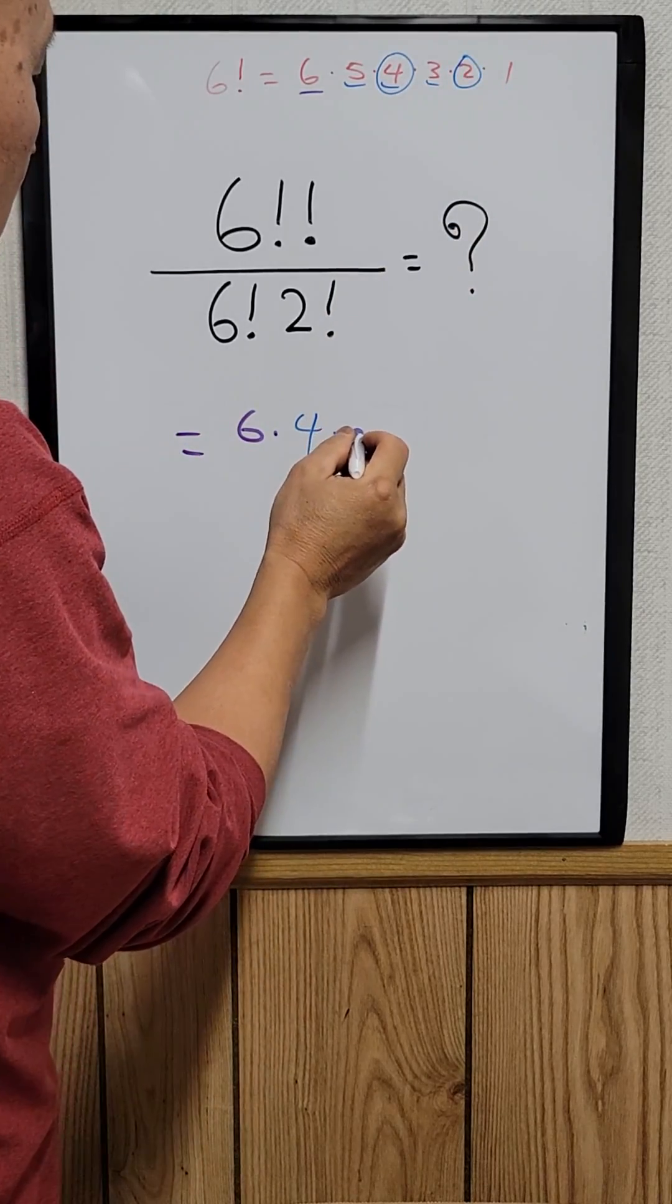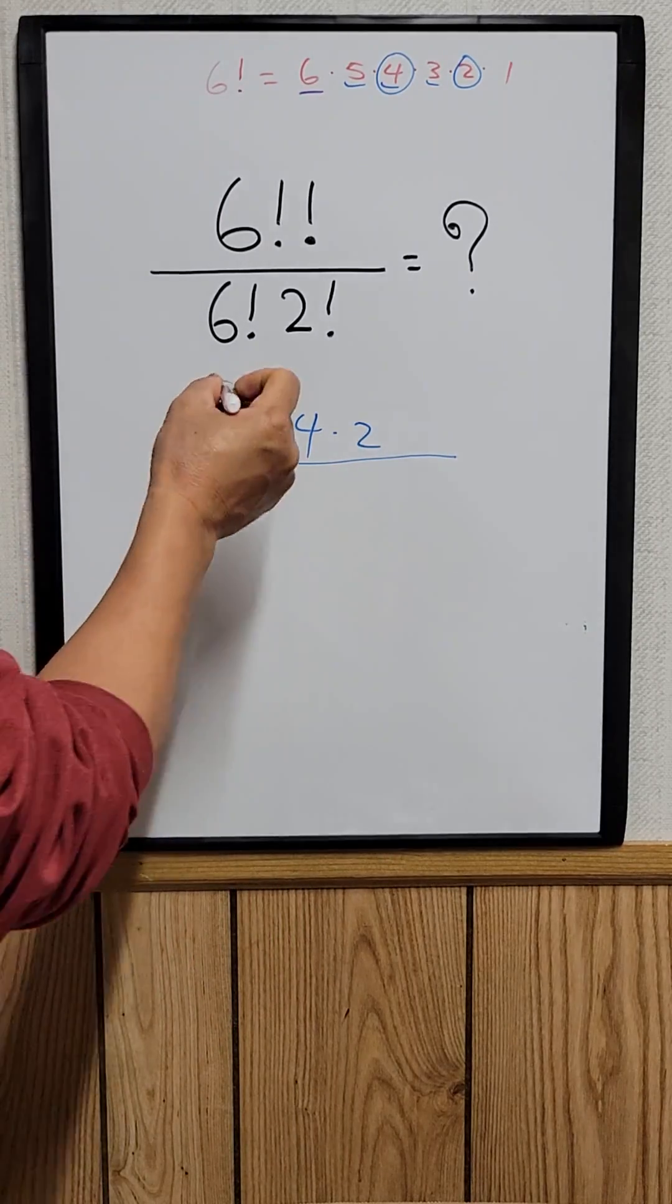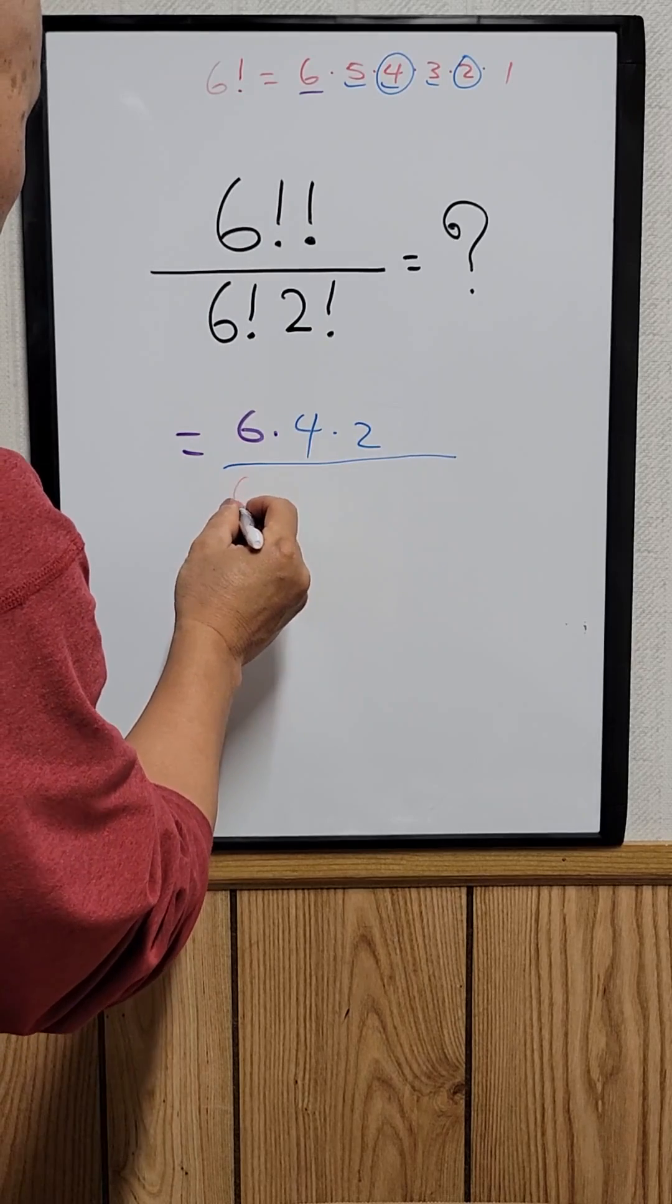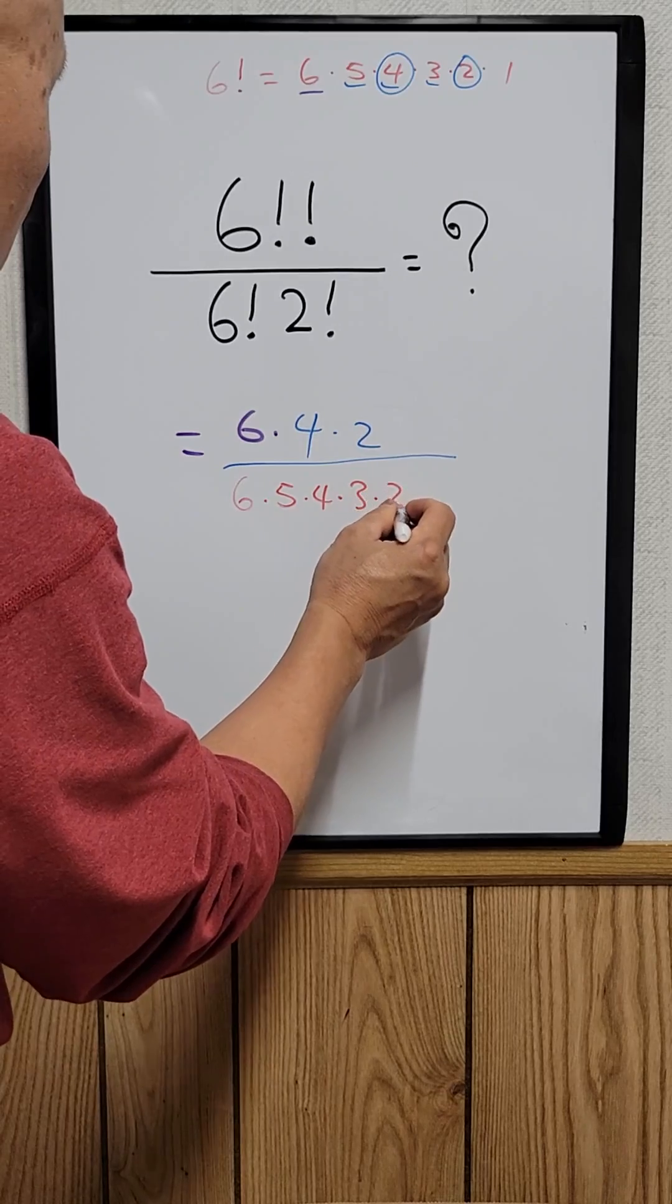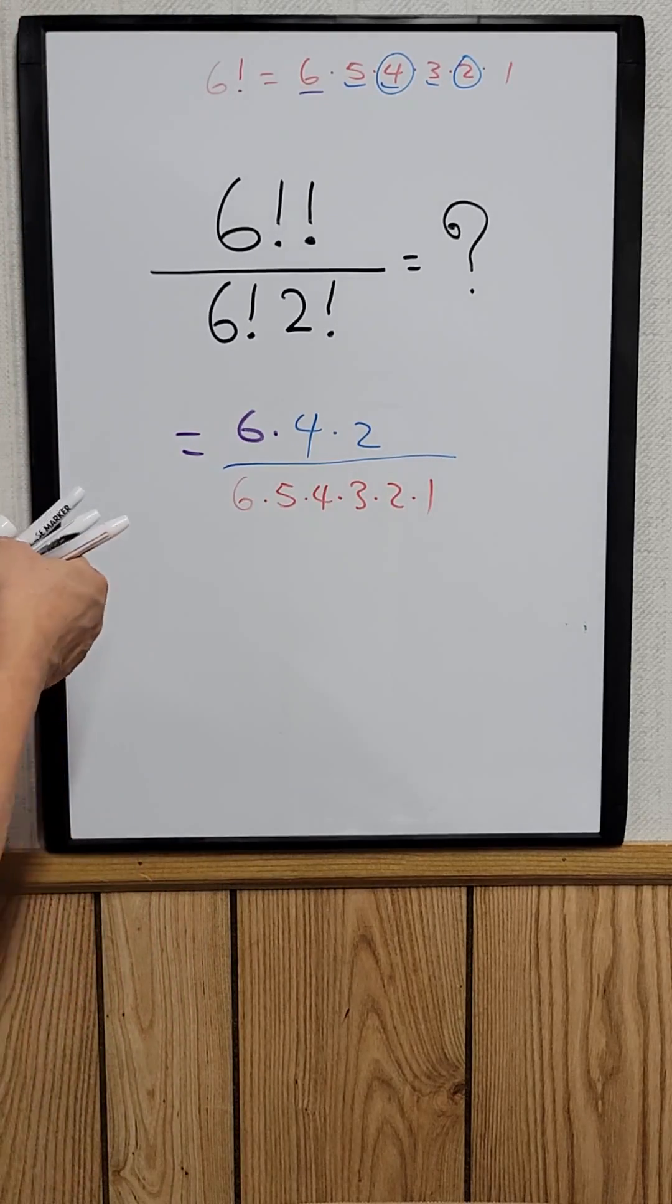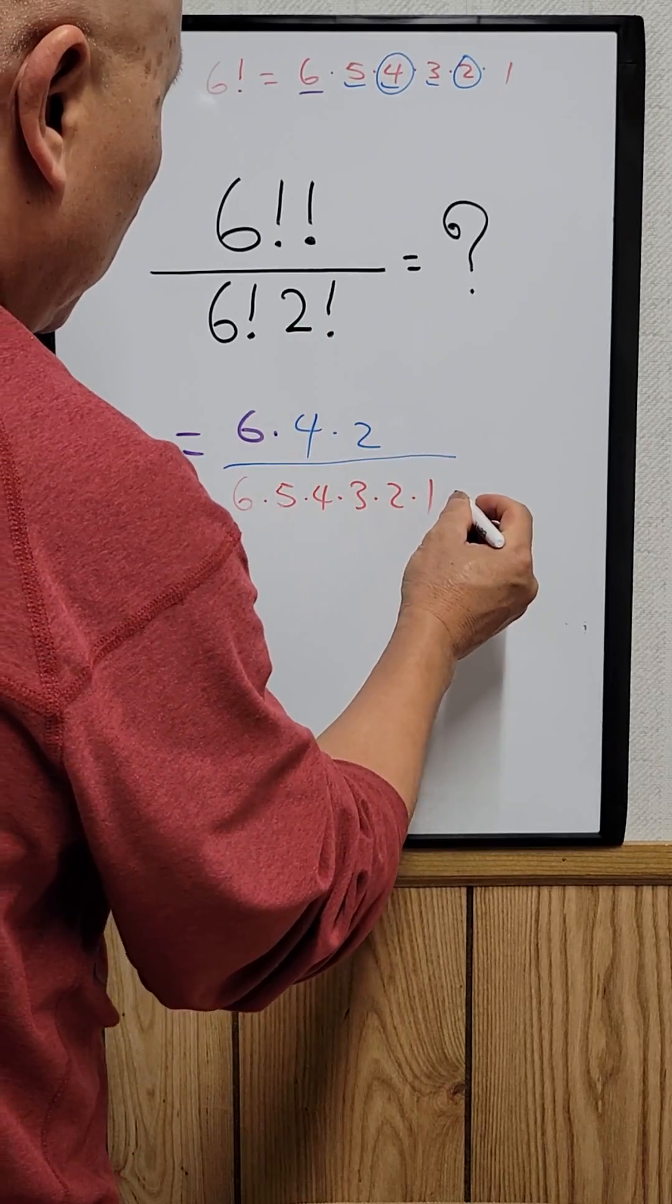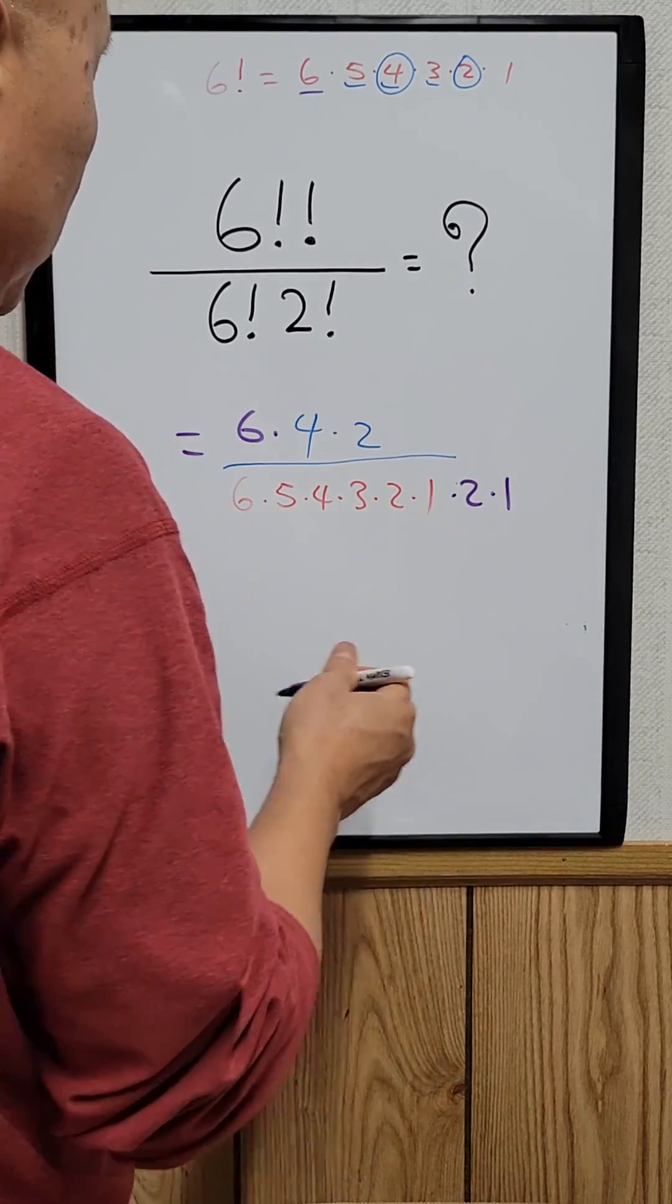Divided by six factorial right here. Six factorial will be just six times five times four times three times two times one, and then two factorial is just two times one.